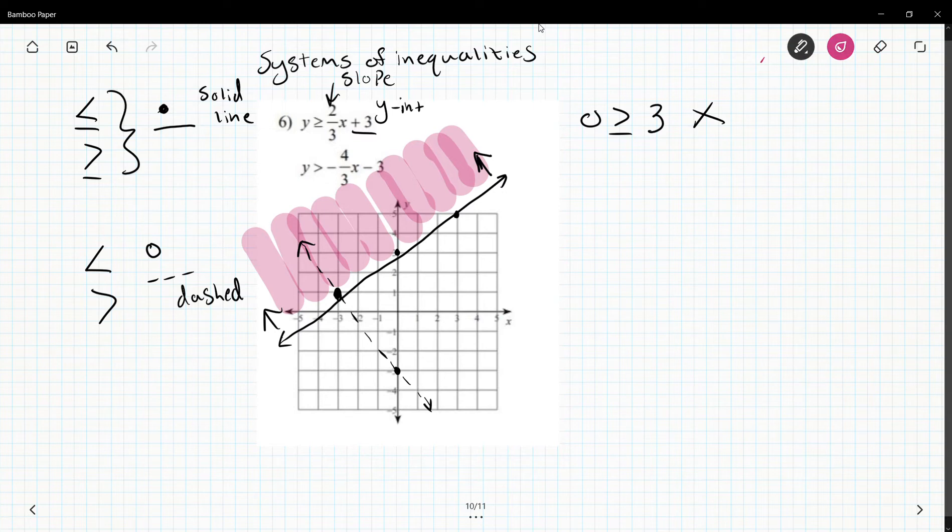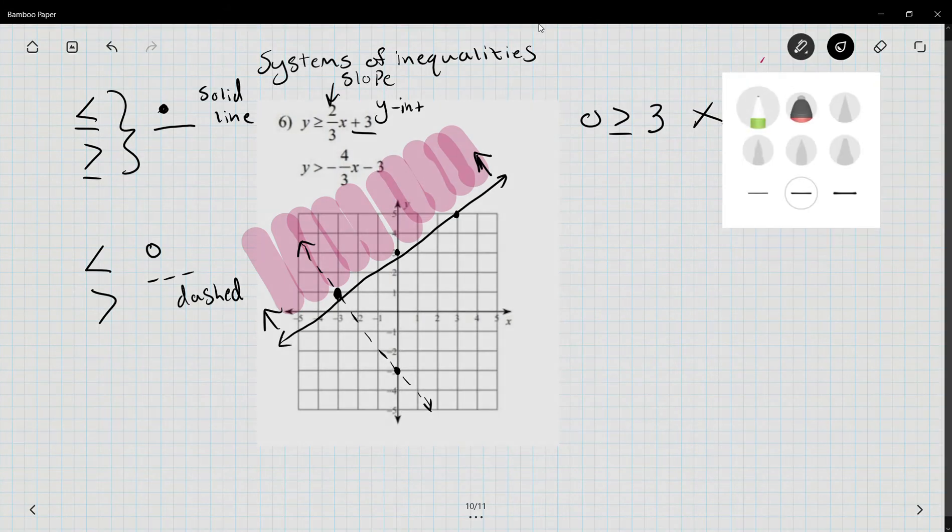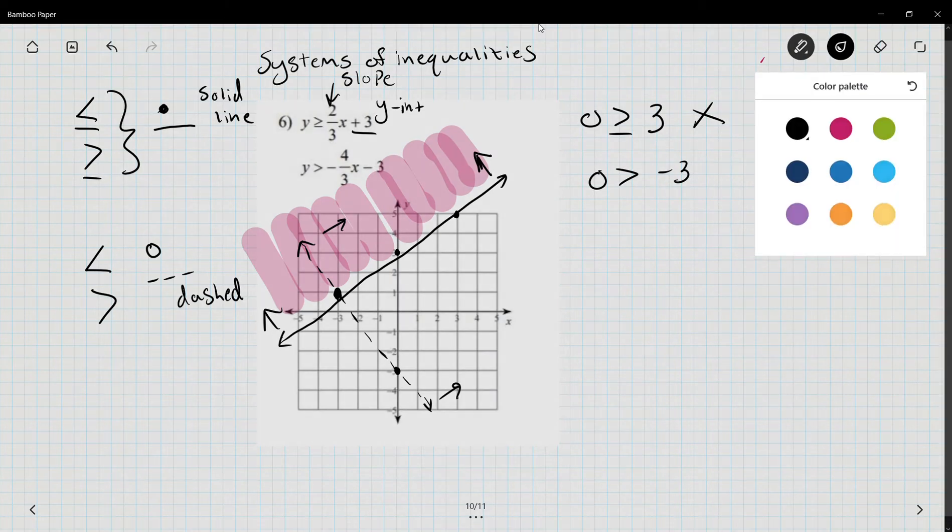The other line, if I plug in zero zero I get zero is greater than negative four-thirds times zero is just zero minus three. Is zero greater than negative three? Yes. That means I'm going to shade this side of this line because that's the side that contains zero and we'll use blue.